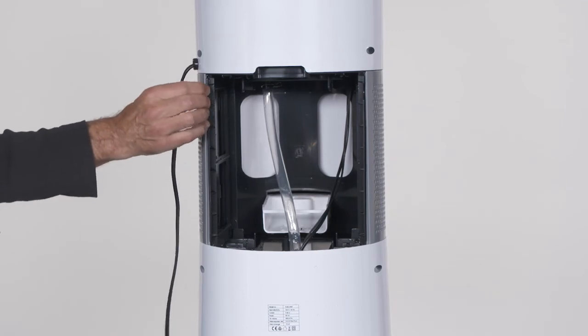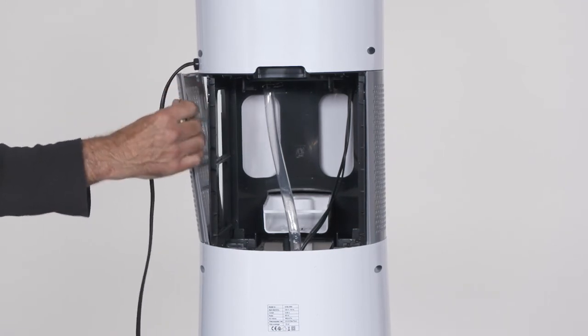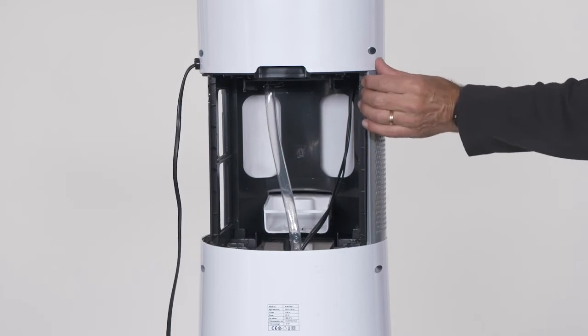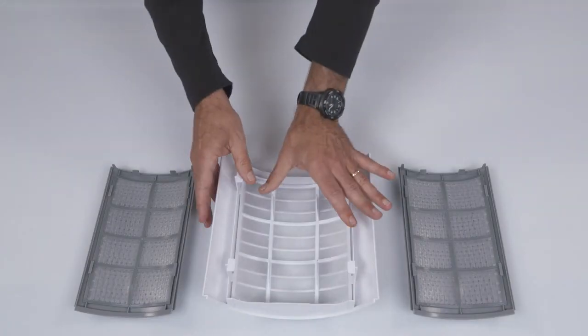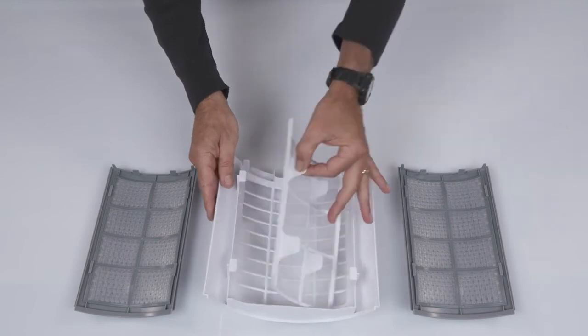Now remove the side panels. These are also friction fit and will come off with light force. Gently remove the air filter mesh from both side panels and the rear panel.